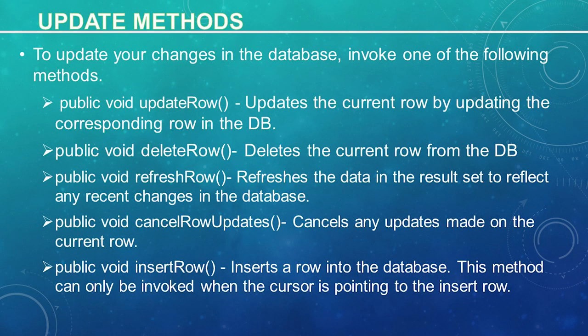Updating a row in the result set changes the columns of the current row in the result set object, but not in the underlying database. To update your changes to the row in the database, you need to invoke one of the following methods: public void updateRow — updates the current row in the database; public void deleteRow — deletes the current row from the database; public void refreshRow — refreshes the data in the result set to reflect recent changes in the database; public void cancelRowUpdates — cancels any updates made on the current row; public void insertRow — inserts a row into the database, and can only be invoked when the cursor is pointing to the insert row.